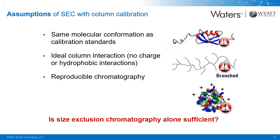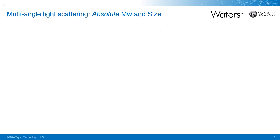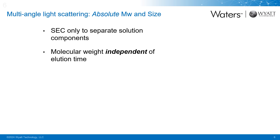As we will see, light scattering can address these weak assumptions by directly and accurately measuring molar mass using first-principle calculations, without the need for column calibration or shape assumptions of any kind. When we add multi-angle light scattering detection to our SEC methods, we no longer need to run column calibration. At that point, SEC is only going to be used to separate our individual species so we can characterize them one at a time as they pass through our light scattering detector. Light scattering will determine your molar mass directly and independently of elution time.